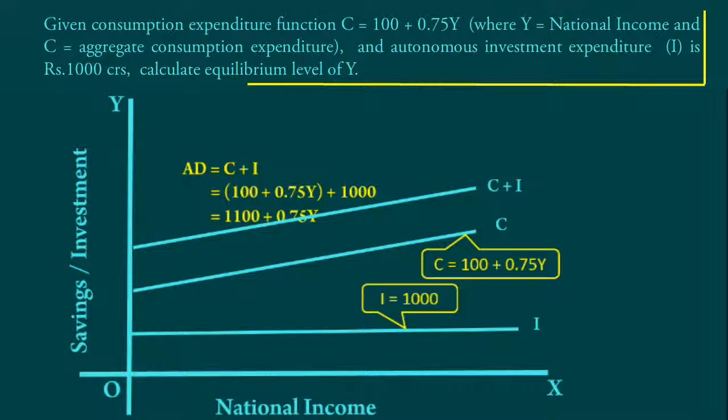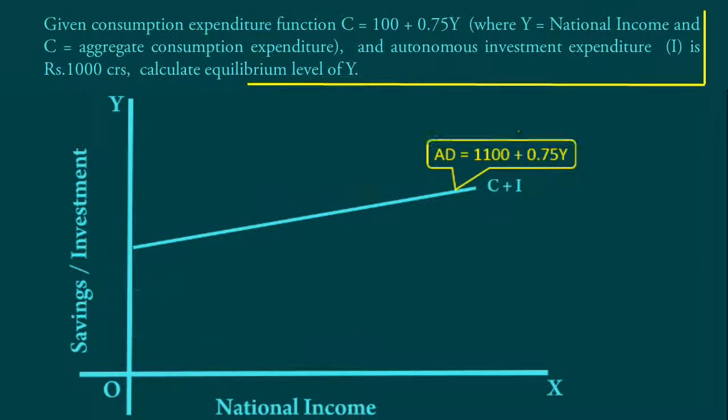C + I is the Aggregate Demand Curve. The Aggregate Demand Function is AD = 1100 + 0.75Y.